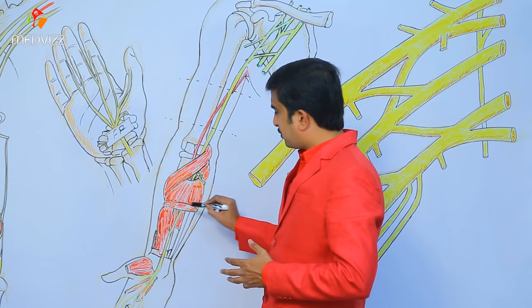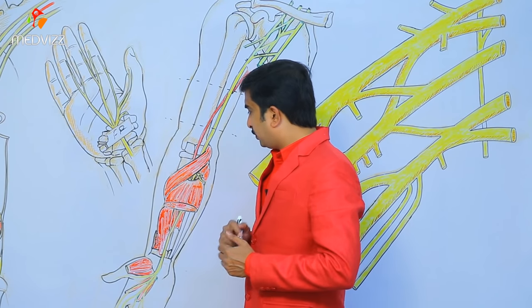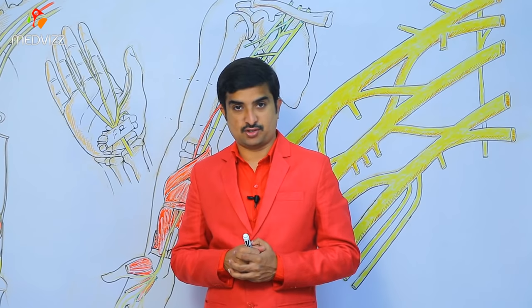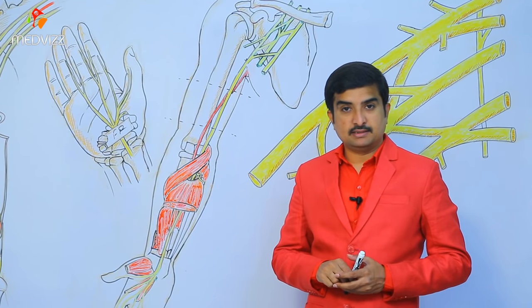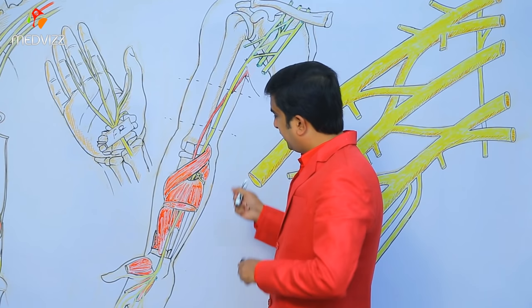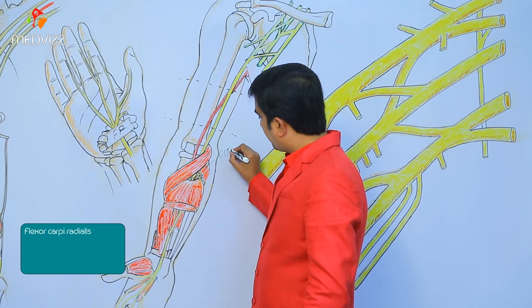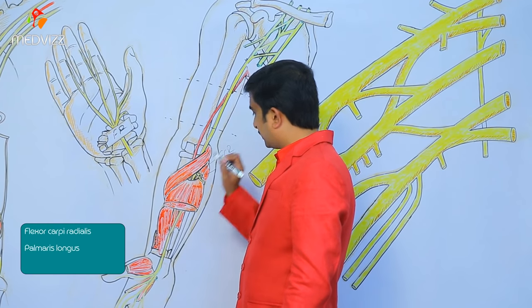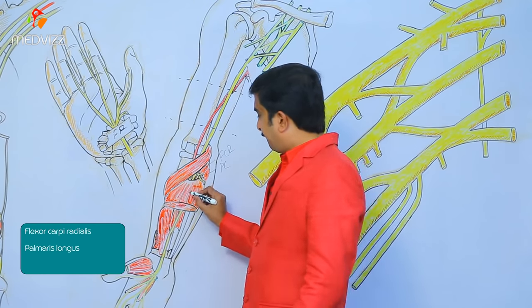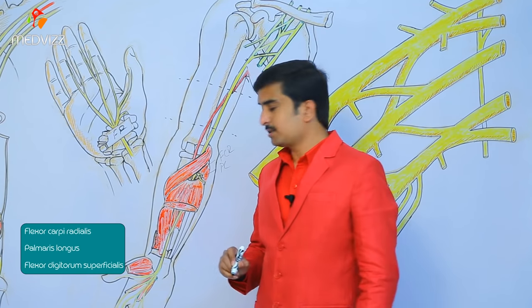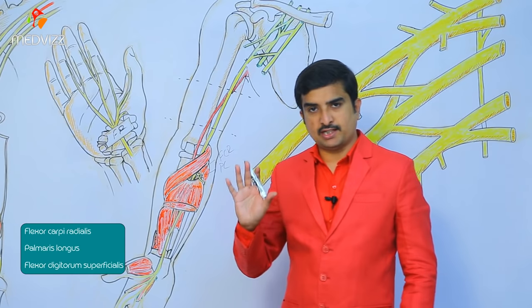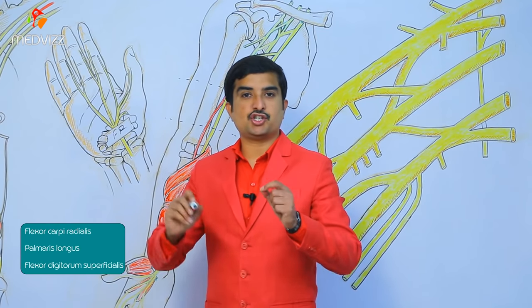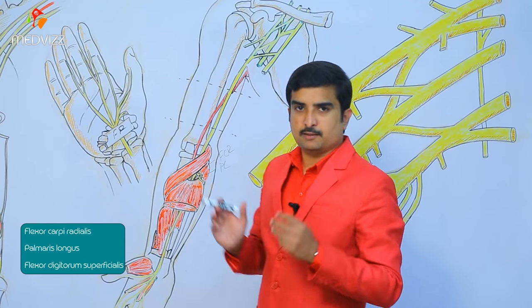In the cubital fossa, the median nerve gives off three muscular branches: one to the flexor carpi radialis, one to palmaris longus, and one to the flexor digitorum superficialis.